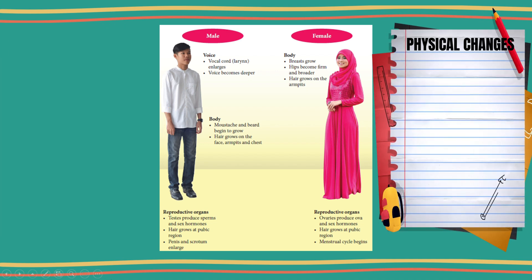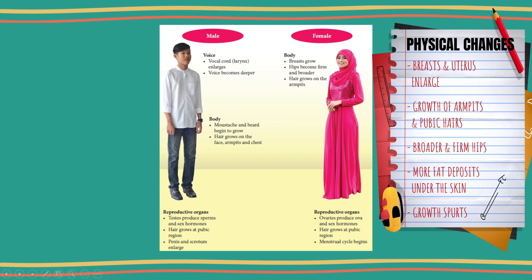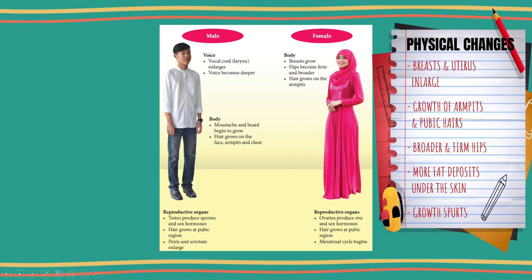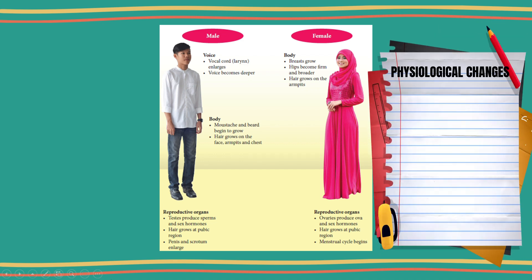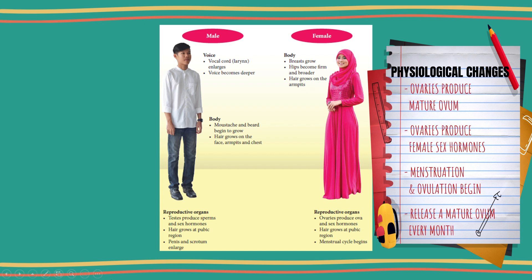Some of the physical changes that occur in females during puberty are: breasts and uterus enlarge, hips become firmer and broader, hair appears in the pubic region and armpits, more fat deposits under the skin, and growth spurts. Physiological changes include the ovaries producing mature ovum and female sex hormones such as estrogen and progesterone, and menstruation and ovulation begin, releasing a mature ovum every month.